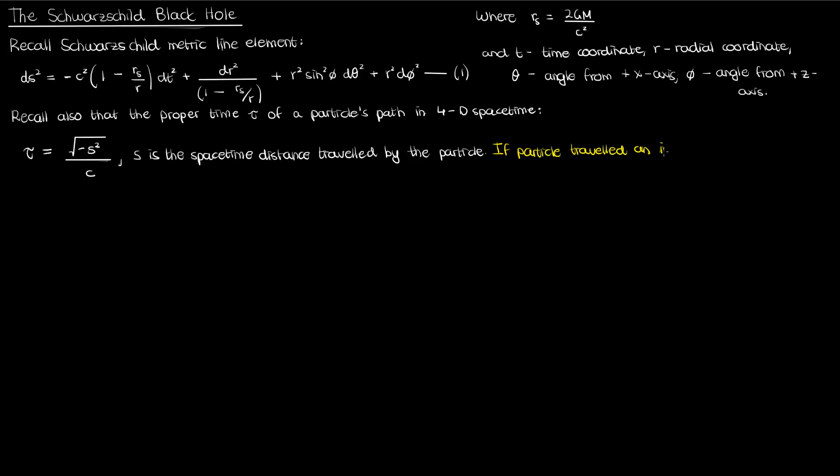If instead my particle traveled an infinitesimally small space-time distance ds with a corresponding infinitesimal proper time interval d tau, then the relationship between d tau and ds would just be the following, very similar to our non-infinitesimal relationship. Of course these two equations are both from my special relativity series. This should hopefully just be a refresher for you. It's essentially the definition of proper time. If I now rearrange this infinitesimal equation in terms of ds squared, I'll get ds squared equals negative c squared d tau squared, and I'll call this equation 2.